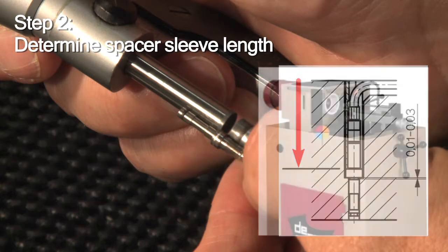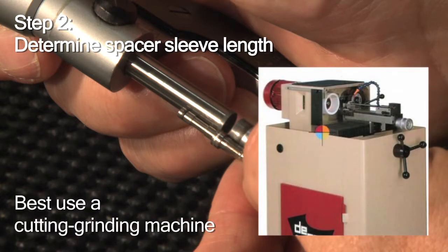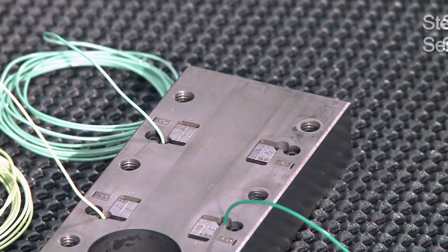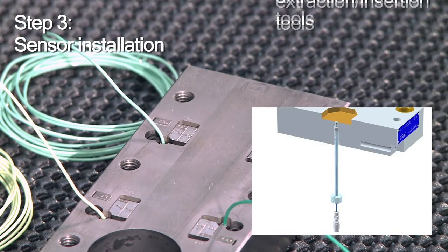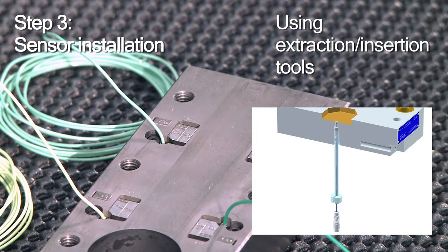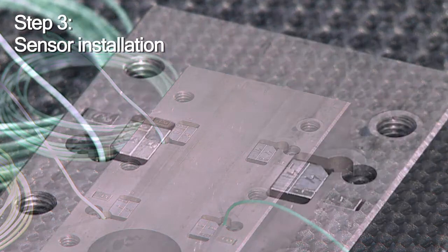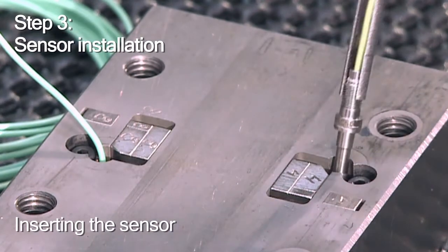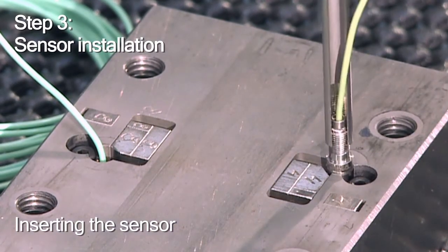To trim and grind spacer sleeves, use a cutter grinding machine if possible. Now you can move on to the sensor installation. Kistler provides special extraction insertion tools for all types of sensors. They allow the sensor to be inserted into the bore very comfortably.